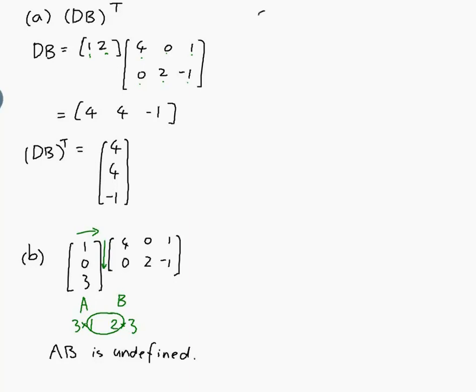Let's do the next one. Part C, BA plus D transpose. So BA, well that would be 4, 0, 1, 0, 2, minus 1, and A is 1, 0, 3. That will be defined when the number of spaces across in this one is the same as the number of spaces down in this one, which they are the same. So I can do it.